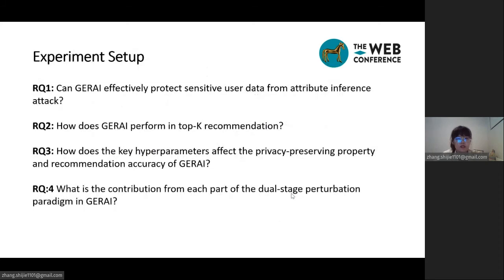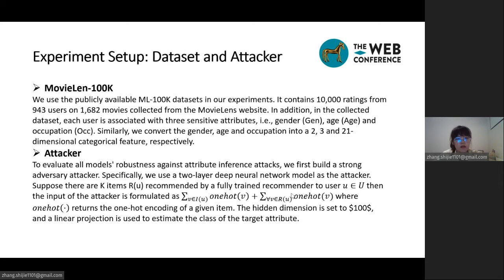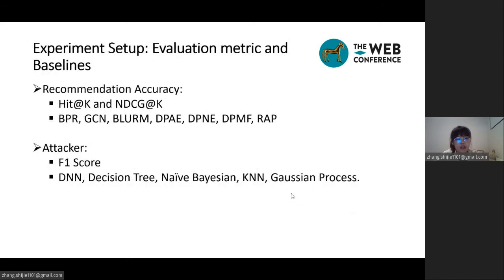To evaluate the performance of GRI in terms of both privacy protection and recommendation effectiveness, we conduct experiments to answer several research questions. We use publicly available datasets where each user is associated with three sensitive attributes: gender, age, and occupation. To evaluate robustness against attribute inference attacks, we build a strong adversary attacker containing a two-layer deep neural network. We adopt two popular metrics and use the F1 score to evaluate privacy protection performance.